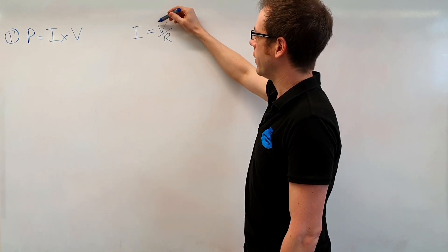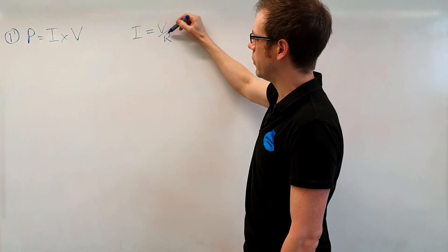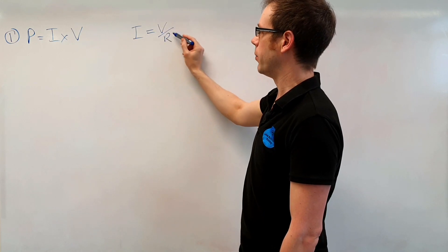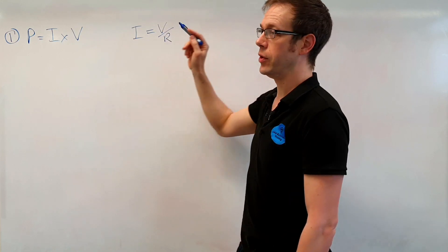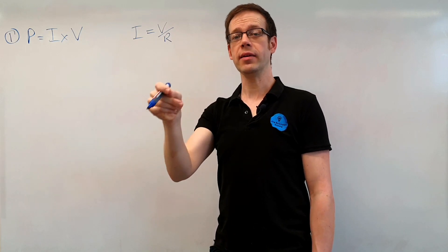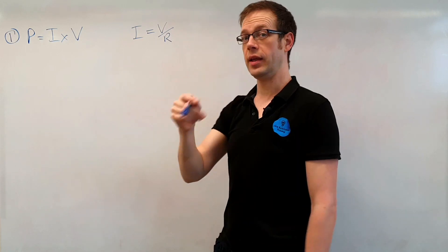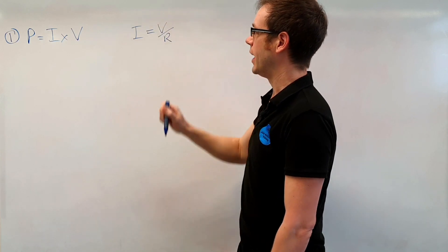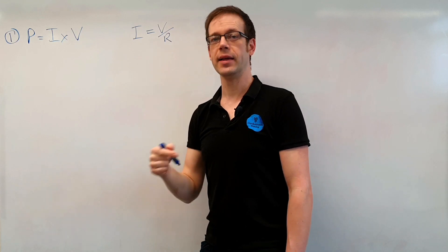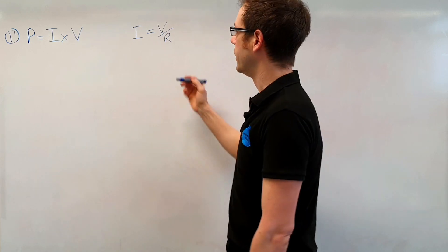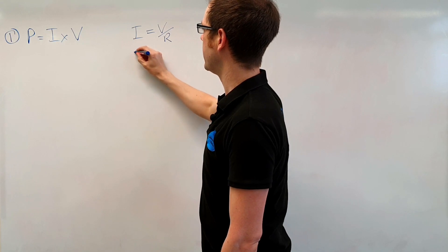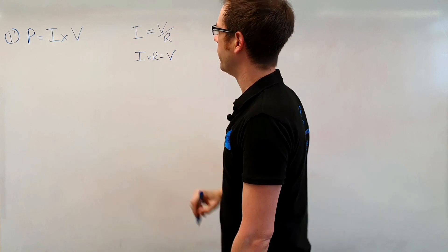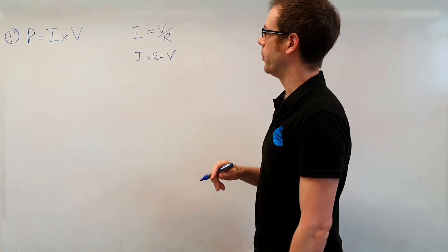We've got first of all I equals V over R so we want to get this V by itself we want to make that the subject and at the moment we've got that V and we are dividing it by R. Now when we want to isolate a letter we have to look at what we're doing to that letter and then do the opposite function. So here V is being divided by R and the opposite of dividing by R is to multiply by R. So we times both sides by R which on this side ends up being I times R and on this side ends up being V and we've looked at that in a couple of different videos how that works.